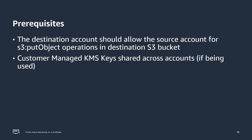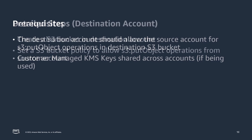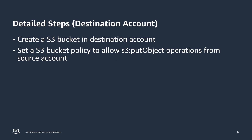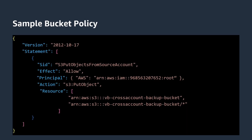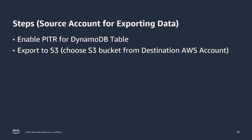As a prerequisite, make sure the S3 bucket in the destination account allows the source account for S3 put object operations. In the destination account, create an S3 bucket and allow it to accept S3 put object operations from the source account — this can be achieved using a sample bucket policy. In the source account, enable point-in-time restore for your source DynamoDB table. Please note that enabling point-in-time restore is mandatory for the export to S3 feature. Once enabled, export the data to the destination account S3 bucket.